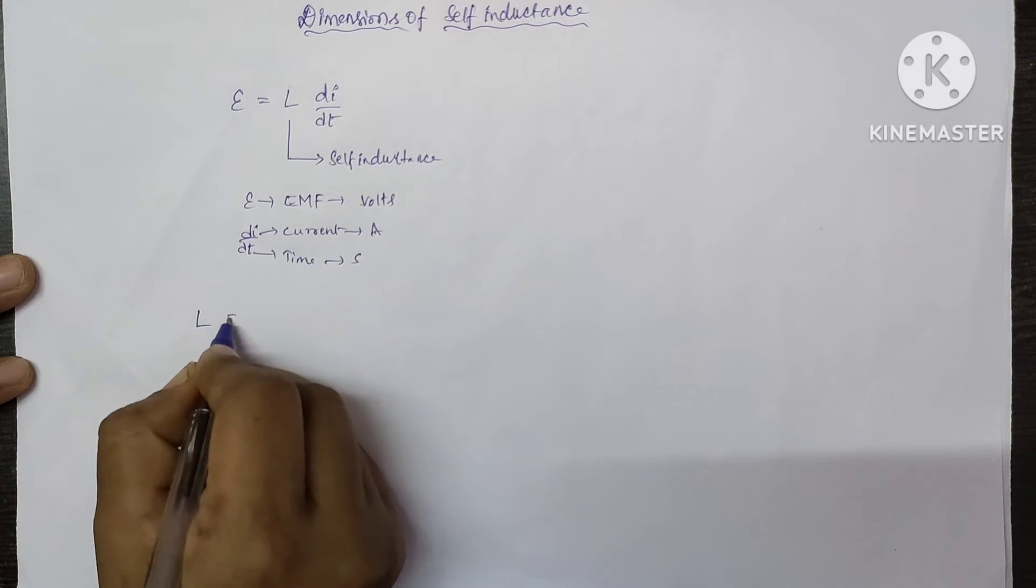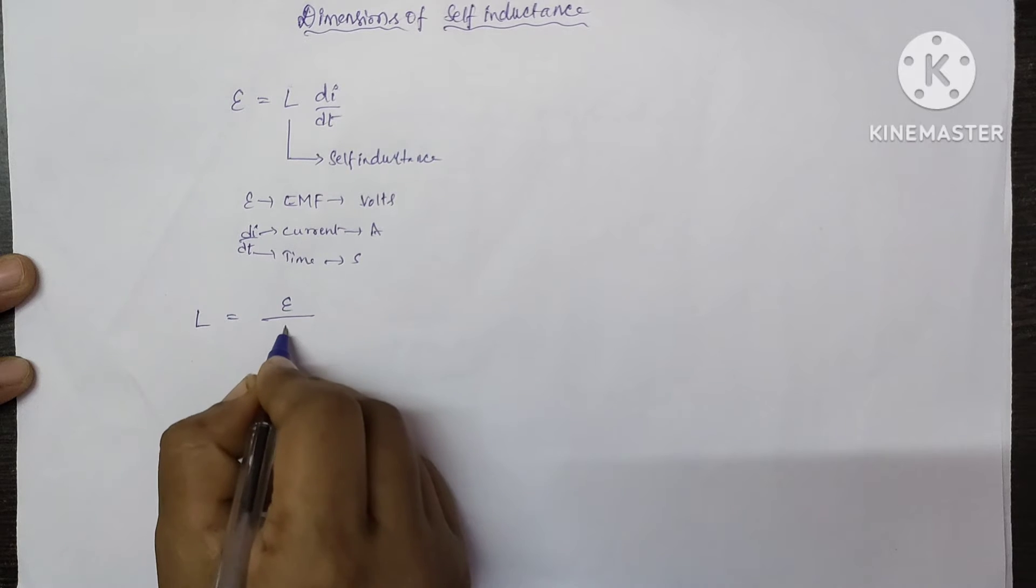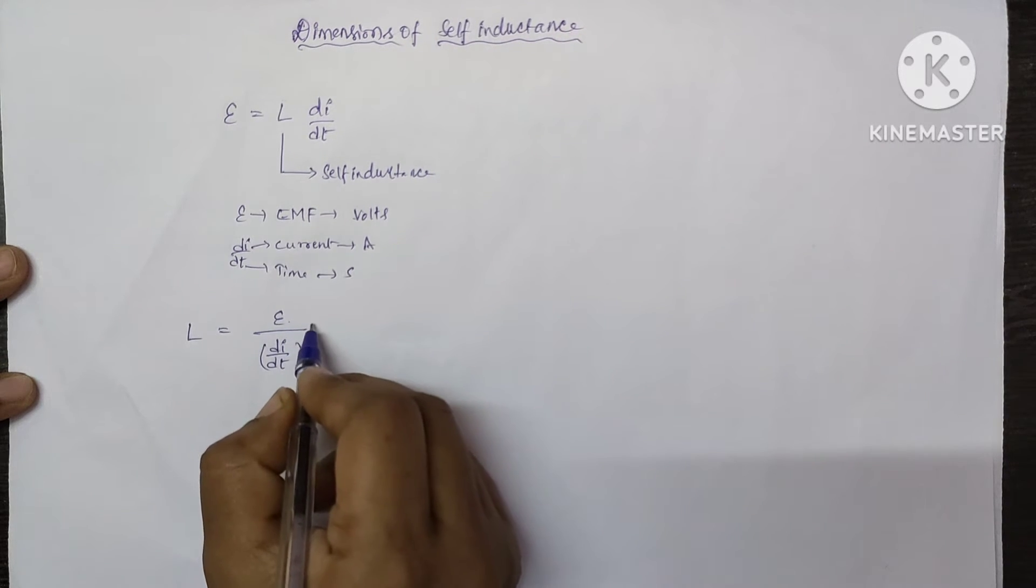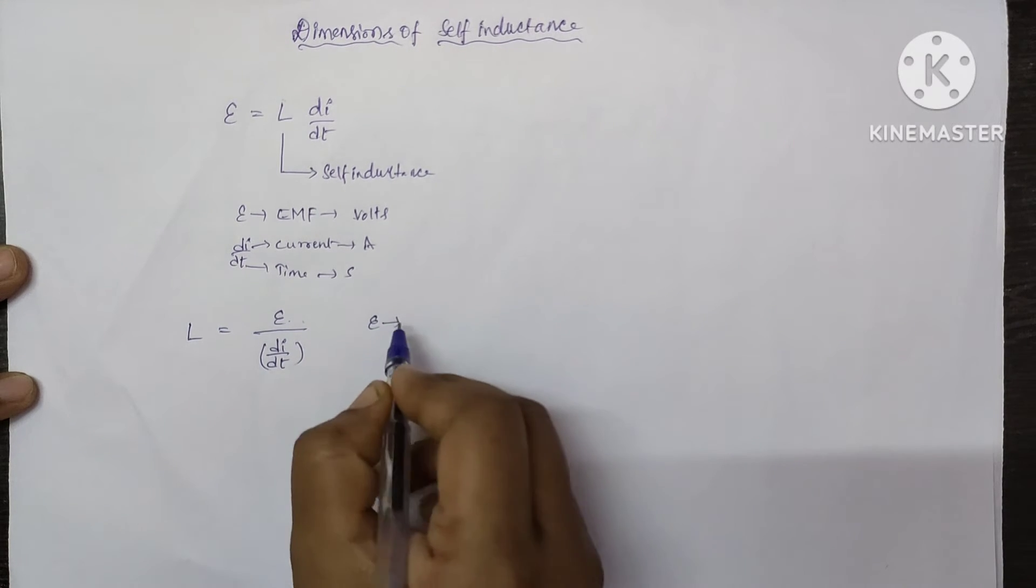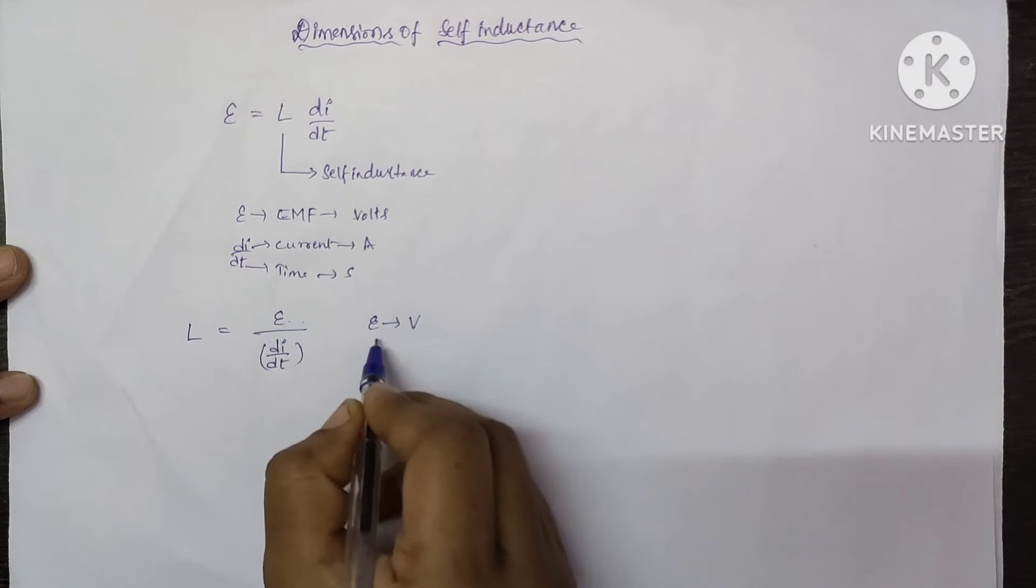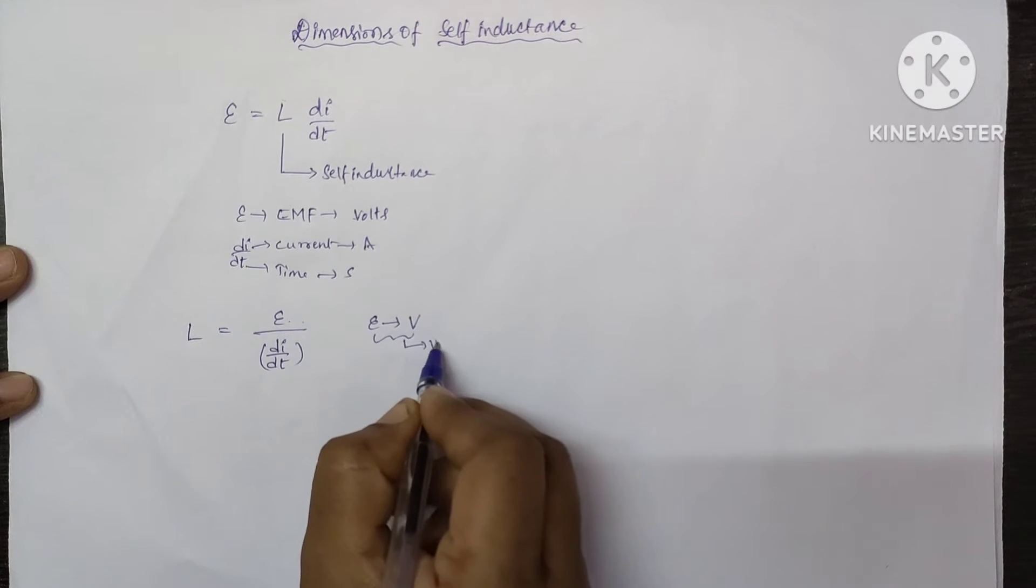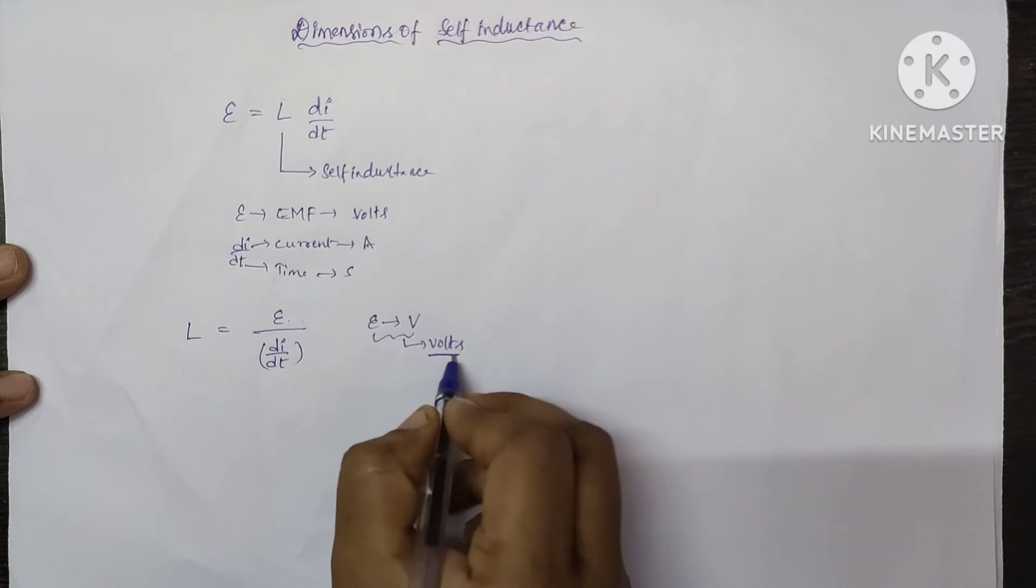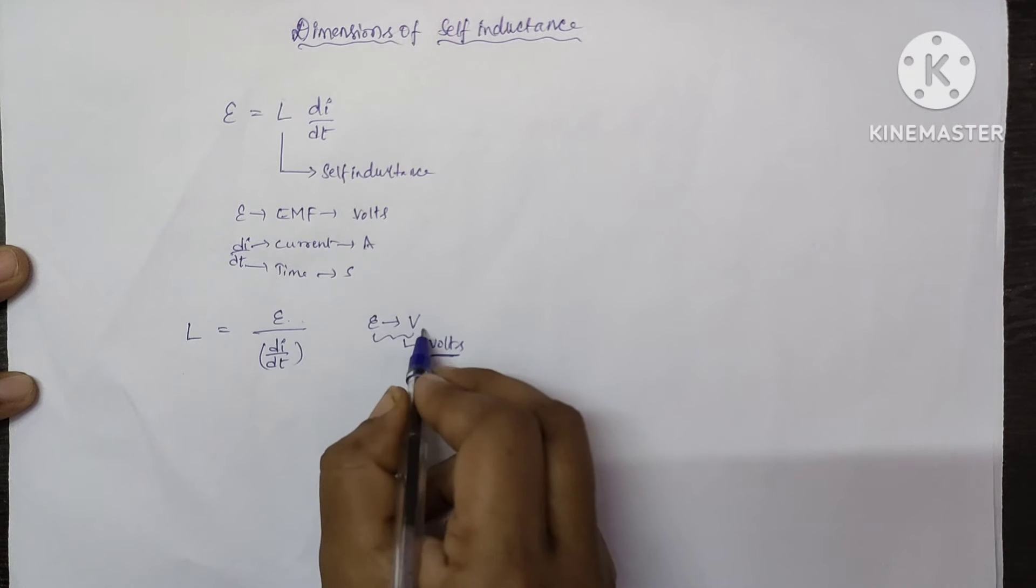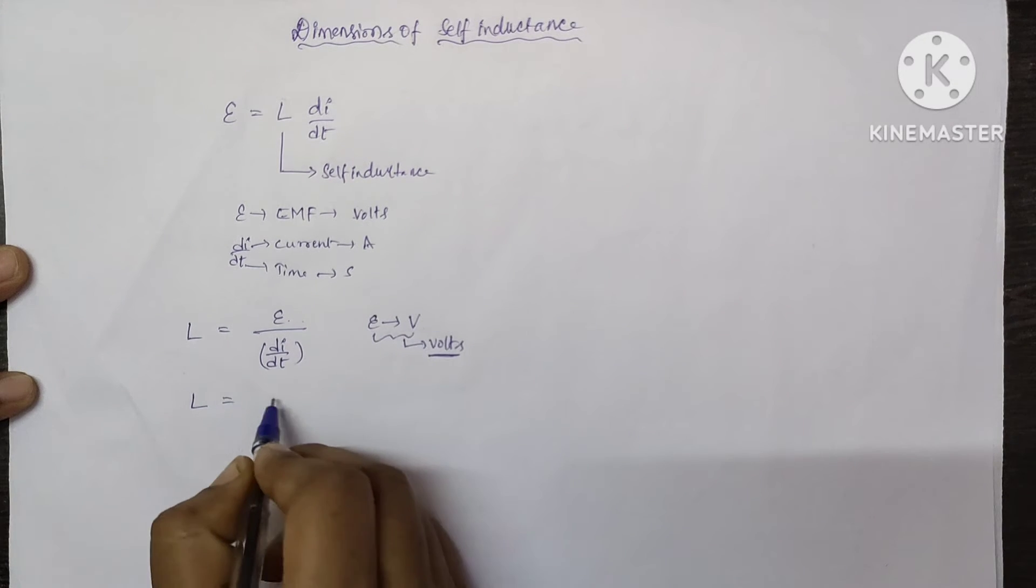For that, rewrite the formula L equal to epsilon divided by di by dt. For writing dimensional formula easily, I am replacing this EMF with potential because both of these have same units. Those physical quantities which have the same SI unit will have the same dimensions. So let's write it here V by di by dt.